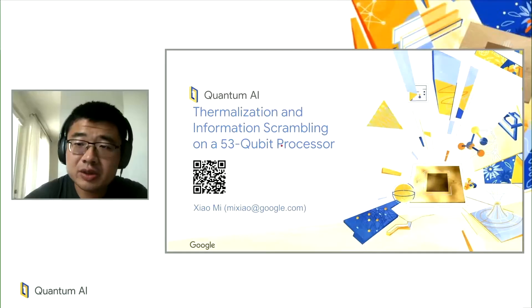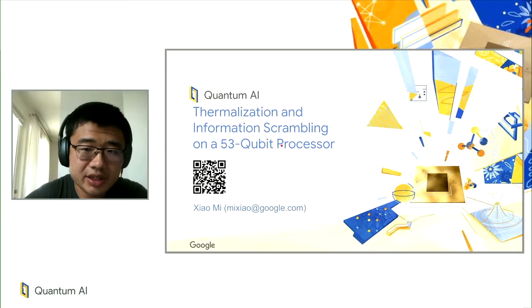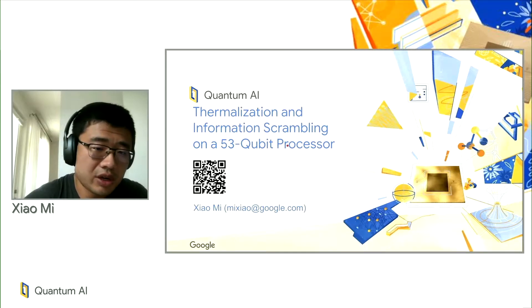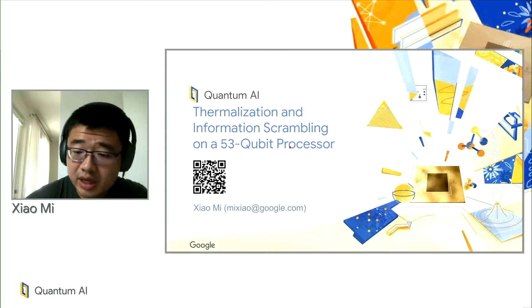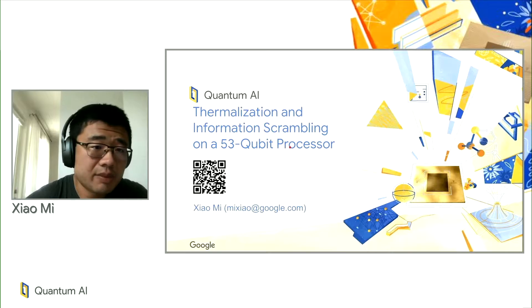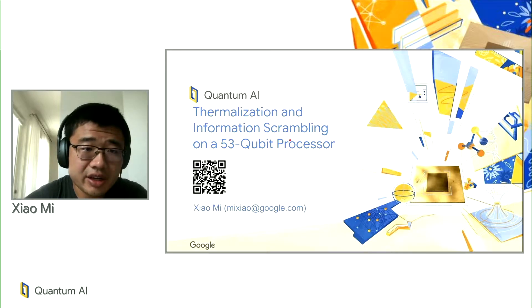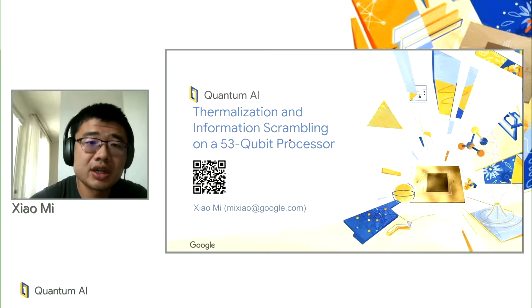Good morning. My name is Xiao. I'm a research scientist in Google's quantum hardware team. Today I'll be talking about an experiment that studies thermalization and information scrambling of a 53-qubit processor.